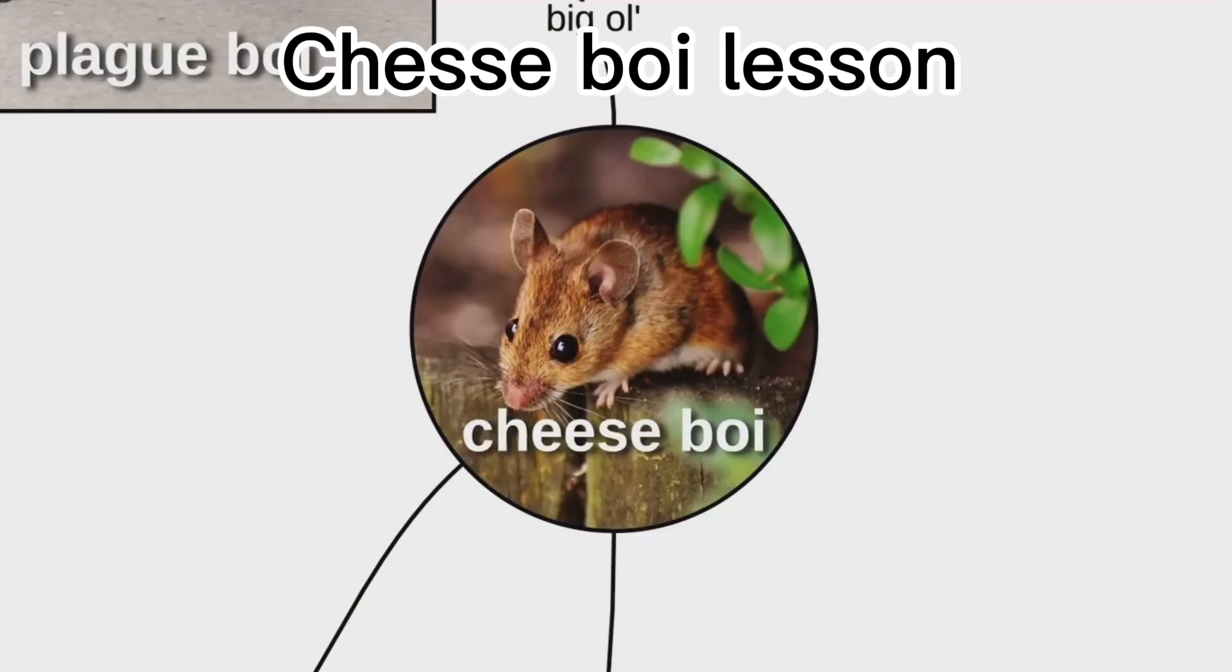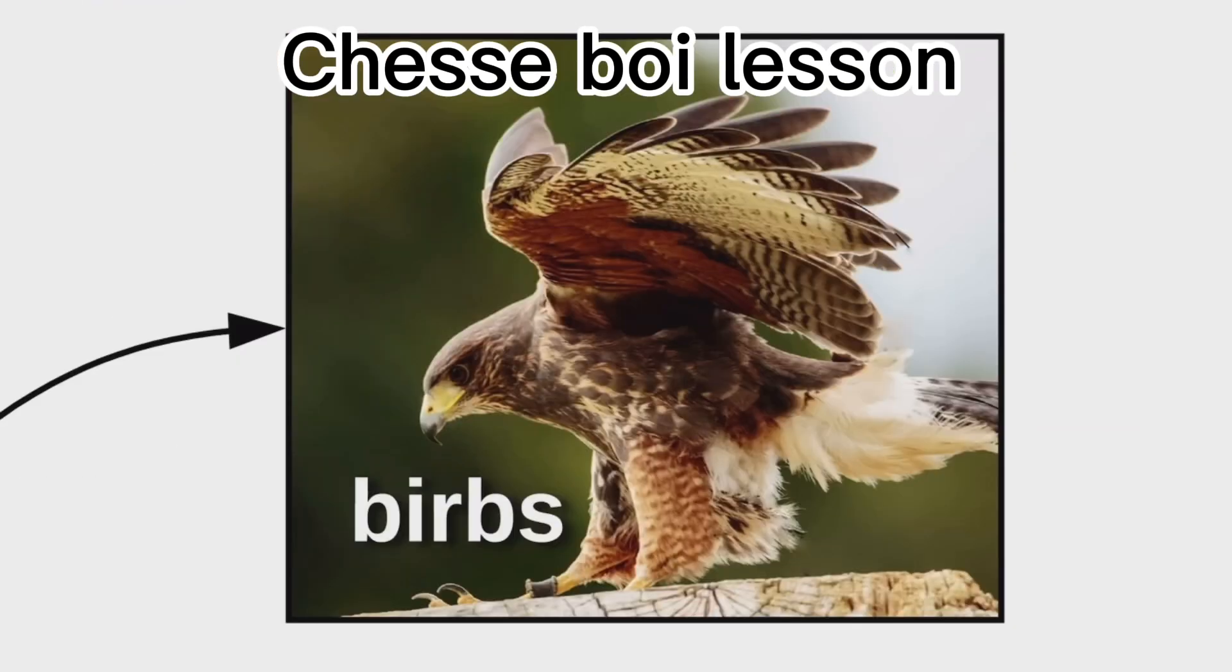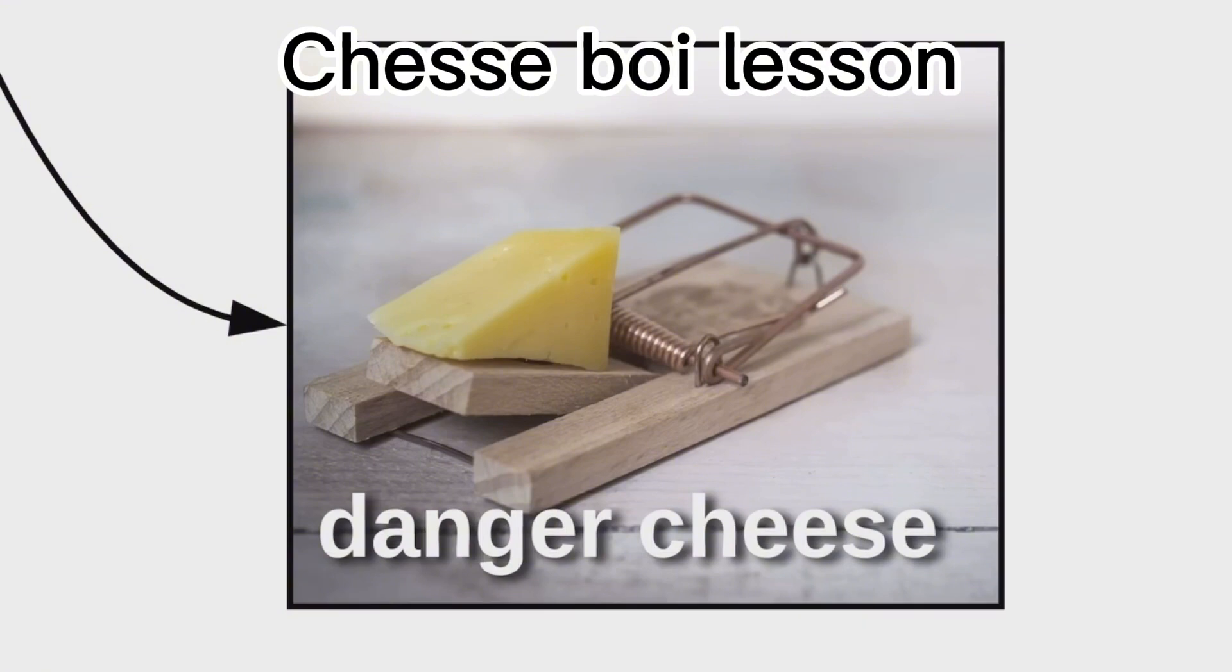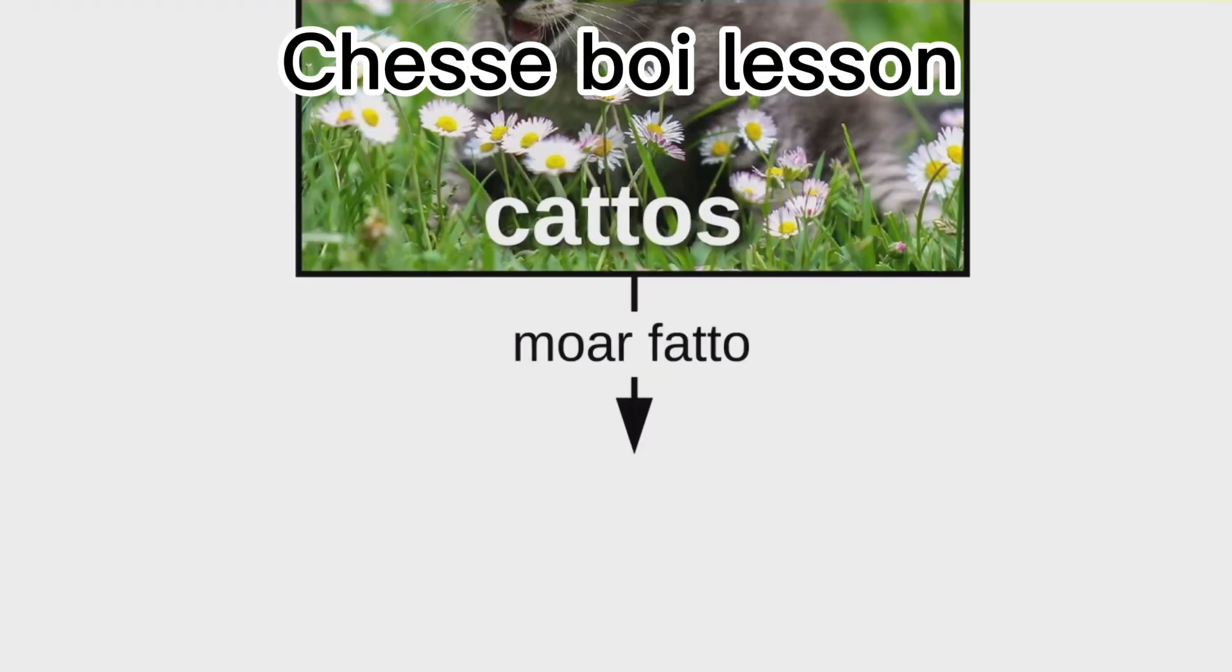Cheese boys have to watch out for lots of predators, like burbs, snakes, and danger cheese. But the most lethal predators are caddos, and the more fat of the caddo, the more dangerous.